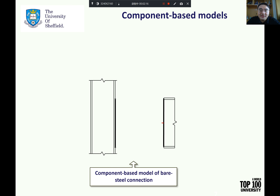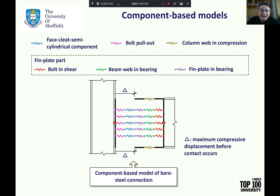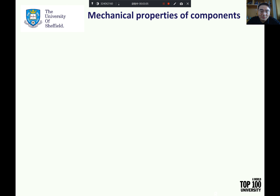Compared with experiments and detailed finite element modeling, using a high-temperature component-based method to simulate connection behavior within a structural finite element program is a more feasible and efficient way to conduct large structural frame analysis in fire conditions. The component-based model of the ductile connection has been proposed. The two end nodes of the component-based model are located at the intersection points between the reference axes of the beam and main column. The basic structural actions of the component-based model are listed in the figure. The gap between the column web in compression and the vertical rigid bar represents the maximum axial compressive displacement before the beam bottom flange contacts the column flange.